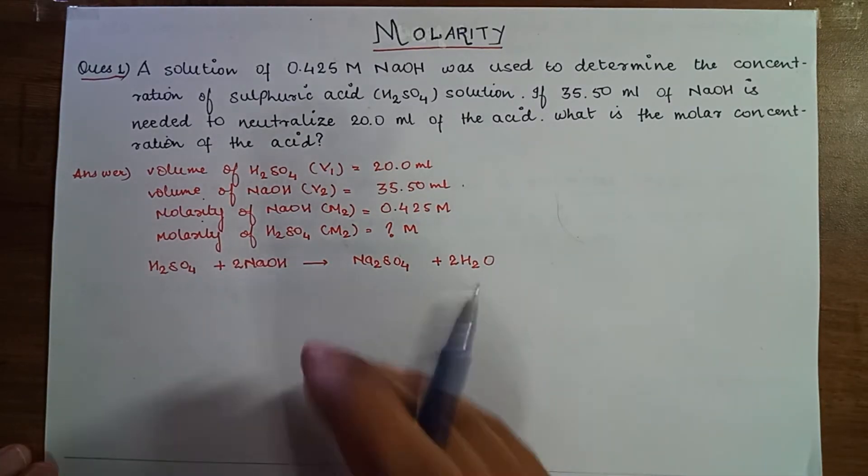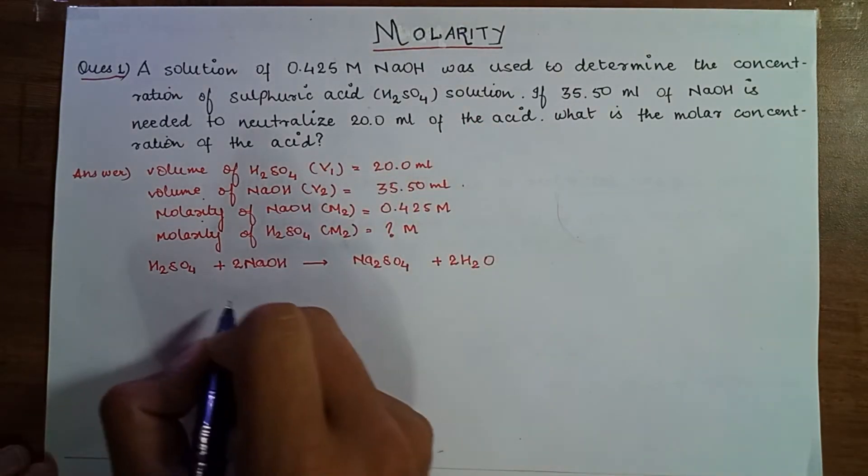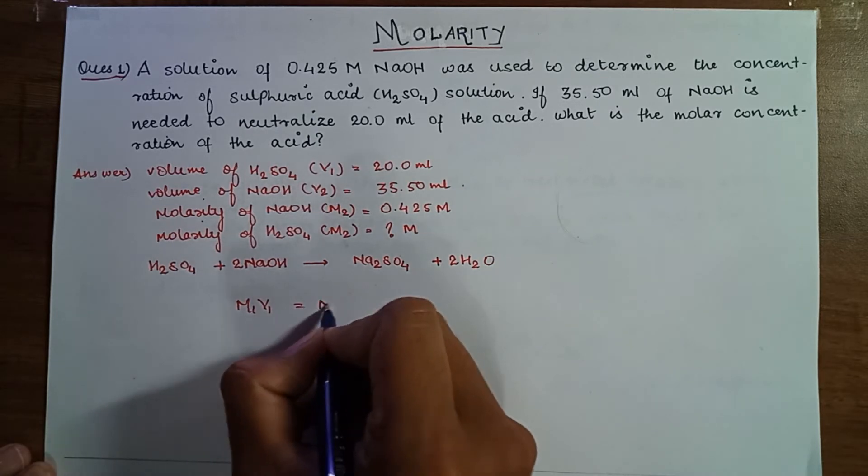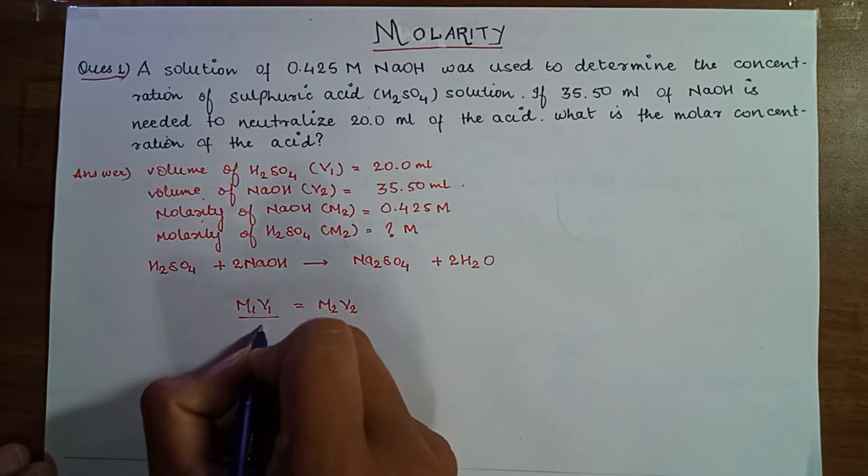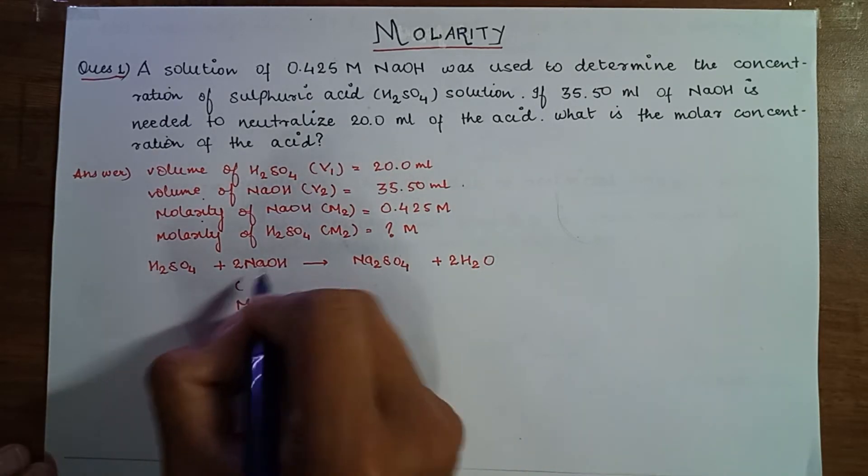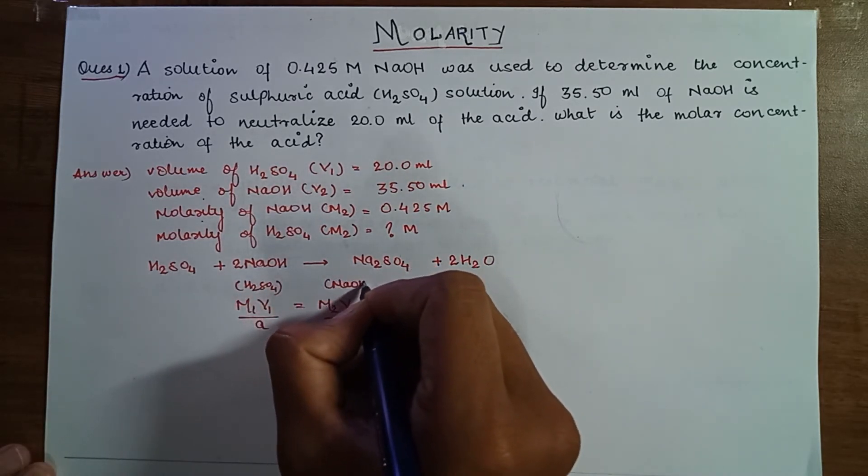Let us write the equation by which we can solve this question, which is my M1V1 equals M2V2 divided by A divided by B. M1V1 where it is of H2SO4 and this is of my NaOH.